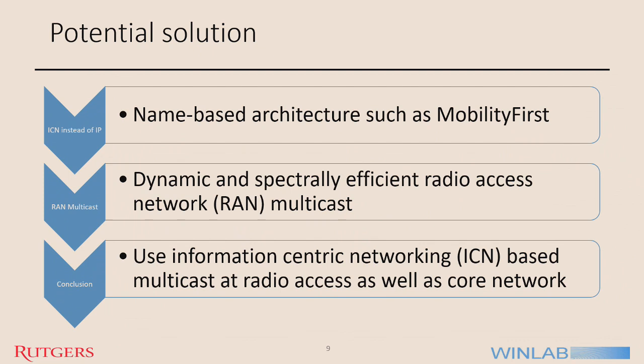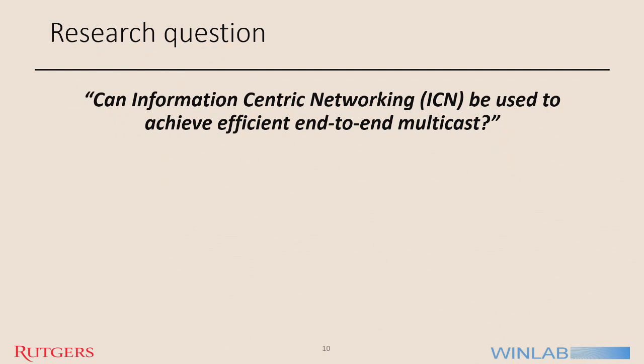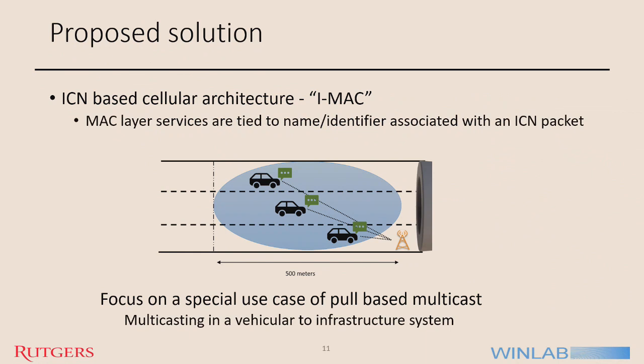This brings us to the research question: can information-centric networking be used to achieve efficient end-to-end multicast? The proposed solution is an ICN-based cellular architecture. The question is: if you deploy ICN, how can you tie the MAC layer services to a name identifier associated with an ICN packet? To validate the efficacy of this design, we specifically focus on a special use case of pull-based multicast, which is a highway-tunnel intersection scenario, discussed more in the system model.